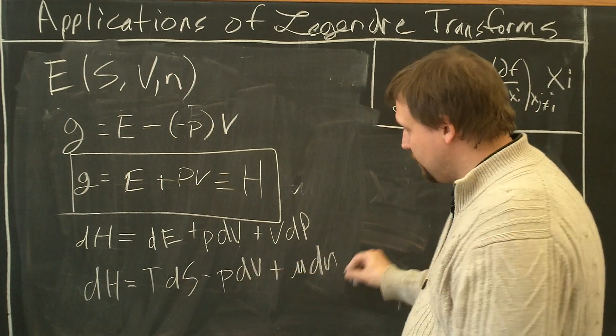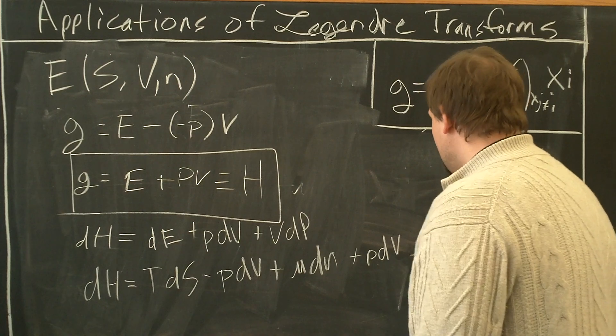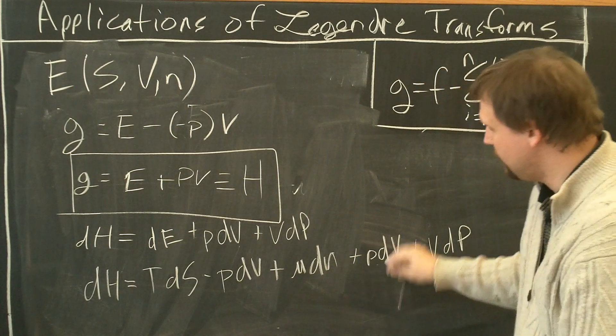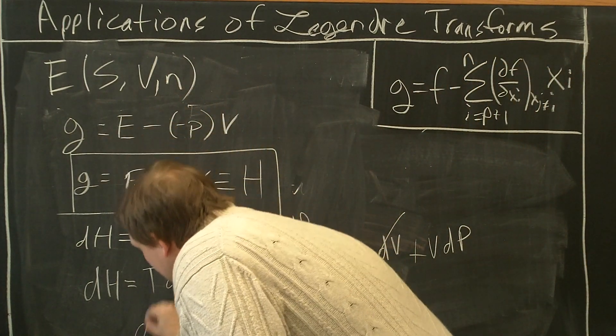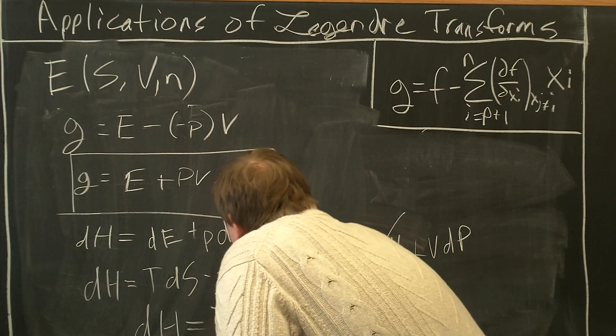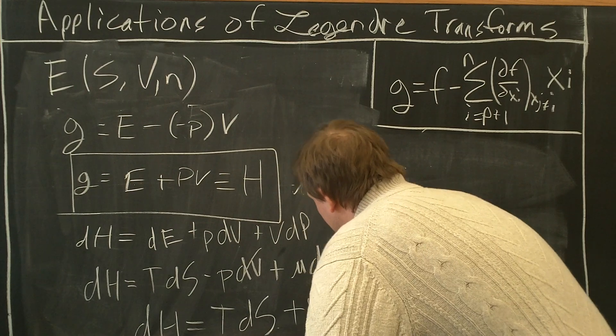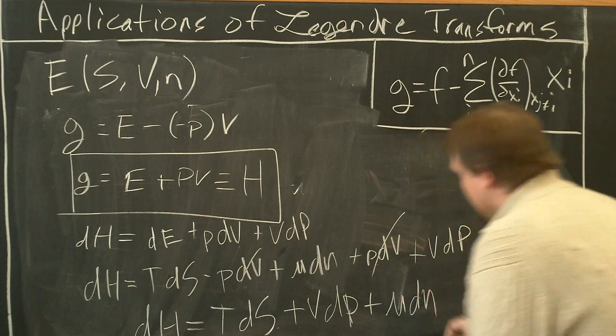So we have to add the rest of the terms on: plus P dV plus V dP. Now which terms cancel out? We have minus P dV here, plus P dV here. If we get rid of those, we find that dH equals T dS plus V dP plus mu dN.